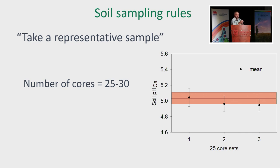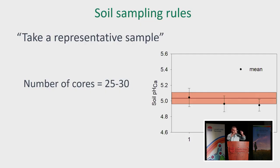This replicates what good practice would be: gone into a uniform area, or a zone I think is uniform, taken 25 cores within that zone, and got a mean. You can see that when you take that approach and sample that paddock three times using 25 cores each time, you're pretty much within that band of the true mean. Within the error bars of each of those 25-core samples, it hits into that band of true meanness. So 25 cores gets you a number that's usable, believable, robust, and repeatable.